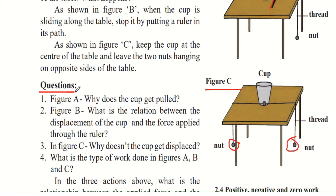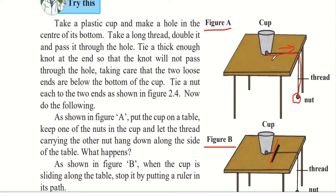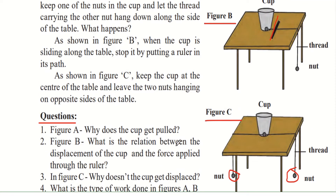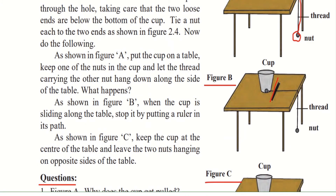In figure A, the cup gets pulled because both nuts are hanging on the same side, making the weight on that side greater, causing the cup to slide. In figure B, the ruler puts a downward force on the string, stopping the cup — the displacement of the cup and the force applied through the ruler are in perpendicular directions.